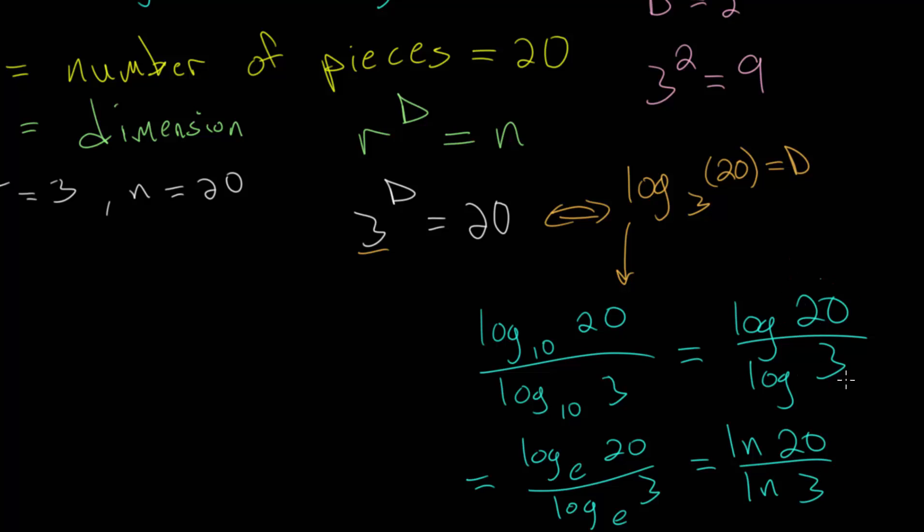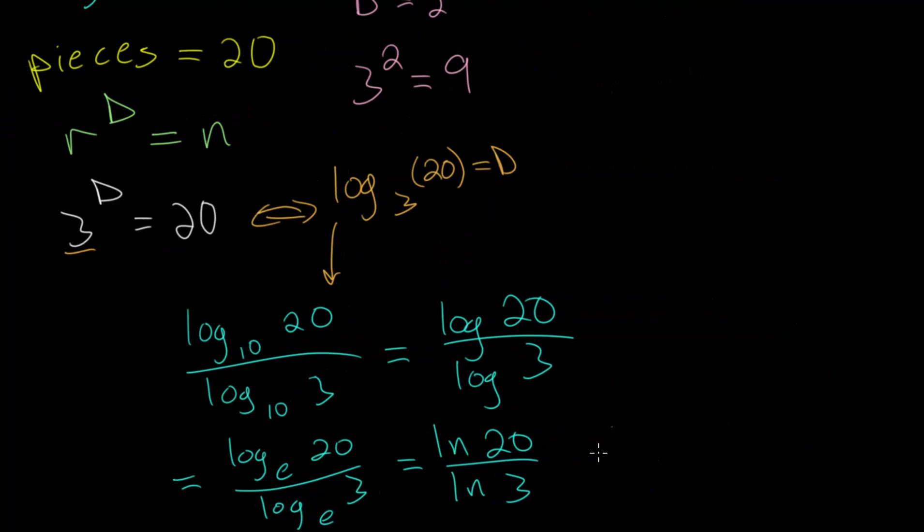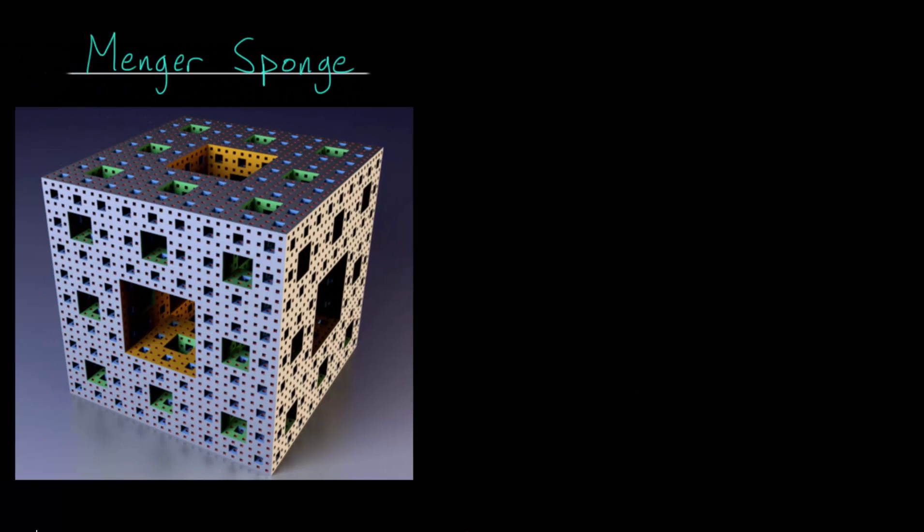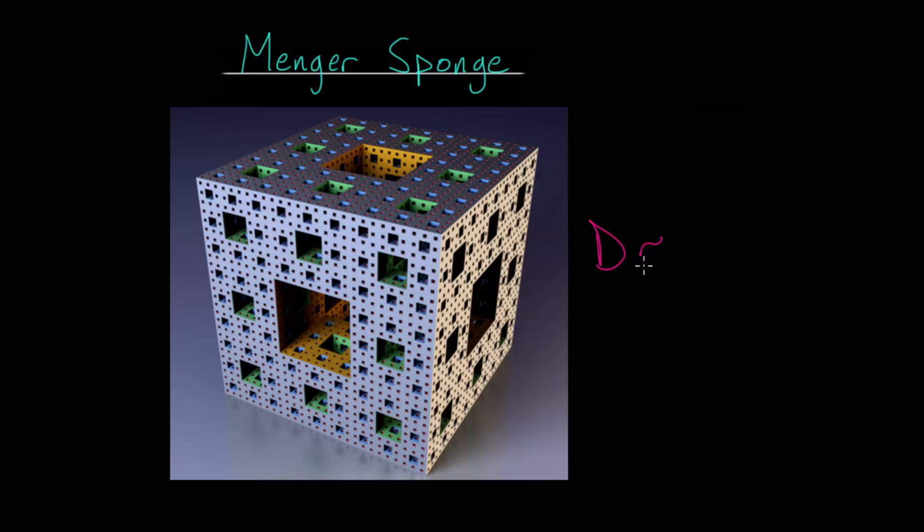Either way, when we plug these into the calculator, we will get the exact same answer. Plugging this into the calculator, we find that the dimension d of this Menger sponge is 2.7268. This is an irrational number, meaning that it'll go on forever. There are infinitely many decimal places, and we will not have a pattern. So the dimension of this shape here, this Menger sponge, is approximately 2.73.